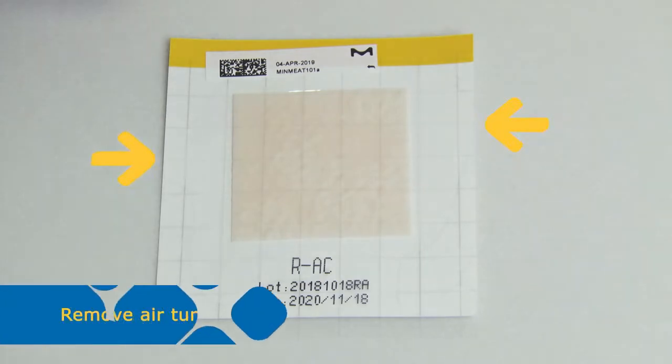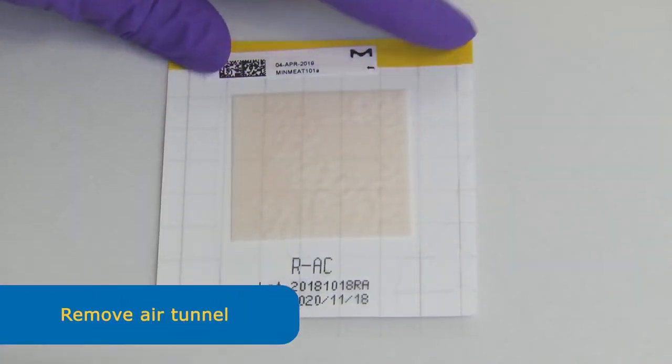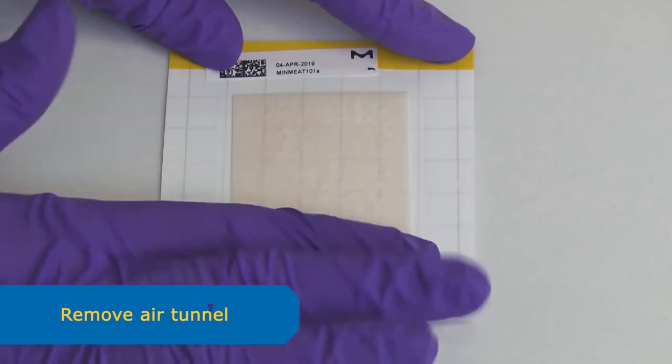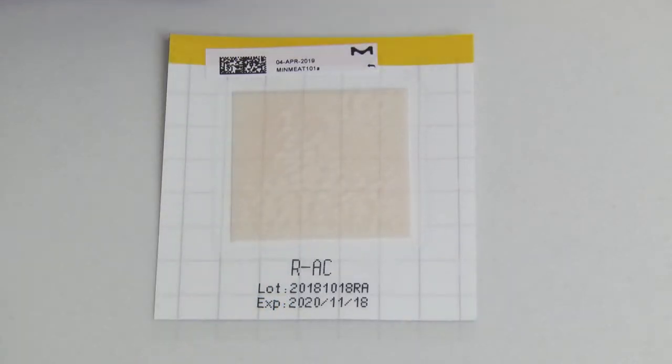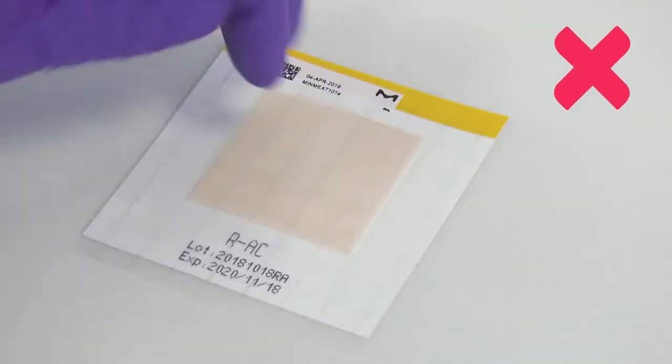Check the closed pad for any air pockets that reach to the end of the pad. They could allow air to enter and lead to the pad drying out. Do not apply pressure on the pad to close it or to remove air tunnels.